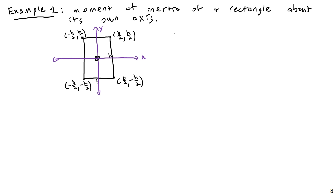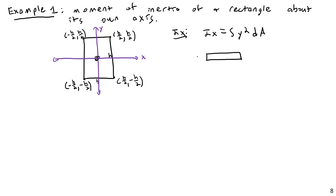Ix is equal to the integral of y squared dA. We have a y squared, so we are going to use a horizontal differential element with a dy. For this rectangle the width of that element is constant — B/2 minus negative B/2 — just a constant B. So dA equals B times dy, and Ix equals the integral of y squared times B dy. I can pull B out as a constant of integration.